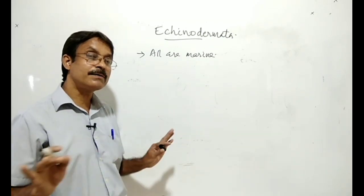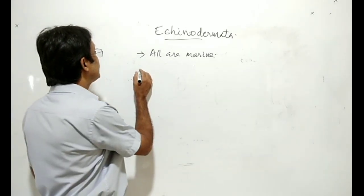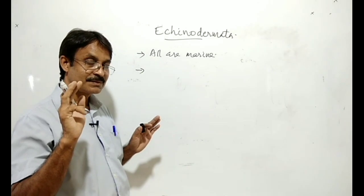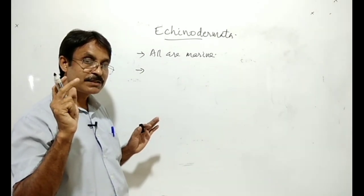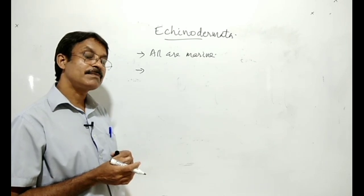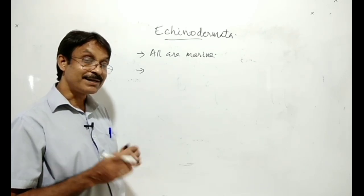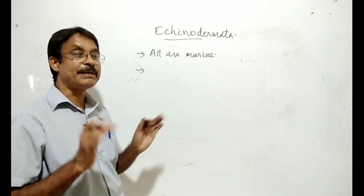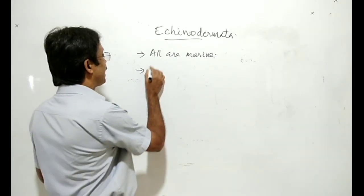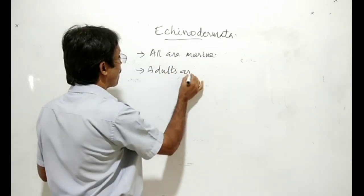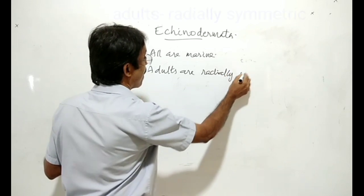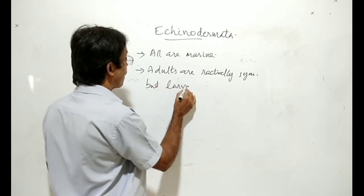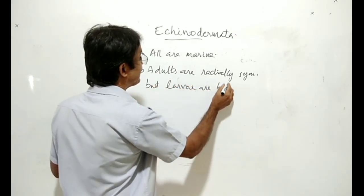All are marine, and like other phyla they are also triploblastic coelomate with organ system level of organization. But their symmetry is different. Their symmetry is very important. That means adults are radially symmetric, but larvae are bilaterally symmetric.